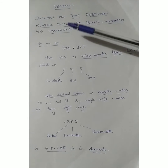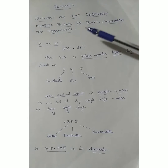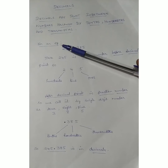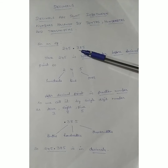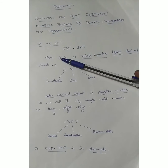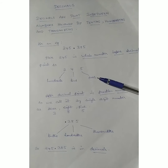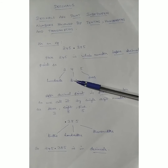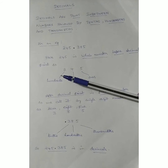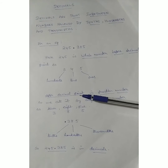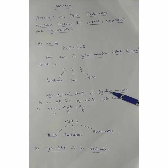Decimals have a point in between numbers, followed by tens, hundreds, and thousands. For an example, 245.385 — here 245 is the whole number before the decimal point. So 245: five is in the ones place, four is in the tens place, and two is in the hundreds place. After the decimal point is the fraction number.